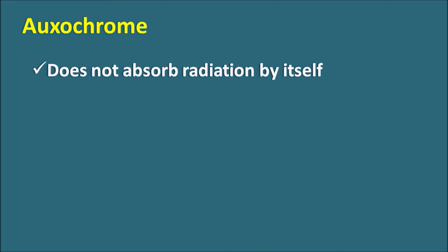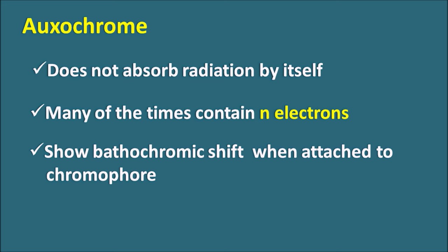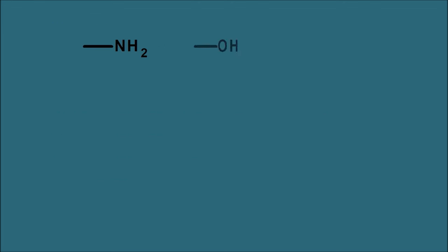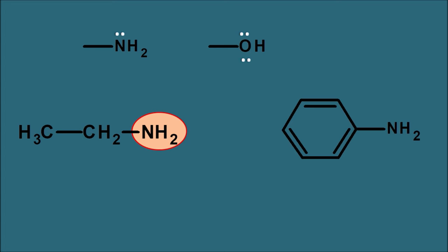Then what is an auxochrome? An auxochrome is a group in the molecule which does not absorb radiation by itself. Many times it contains lone pair of electrons and it shows a bathochromic shift when attached to the chromophore. An auxochrome does not absorb by itself but increases the absorption of the chromophore — this is just like a catalyst in chemical reactions, where the catalyst does not participate in the reaction but increases its rate. NH2 and OH groups can act as auxochromes. The NH2 group has one lone pair of electrons and the OH group has two lone pairs. These groups can increase the absorption capacity when attached to the chromophore. For example, the same NH2 group that is in ethanamine, when attached to the benzene ring system, acts as an auxochrome in aniline and increases the absorption of benzene.